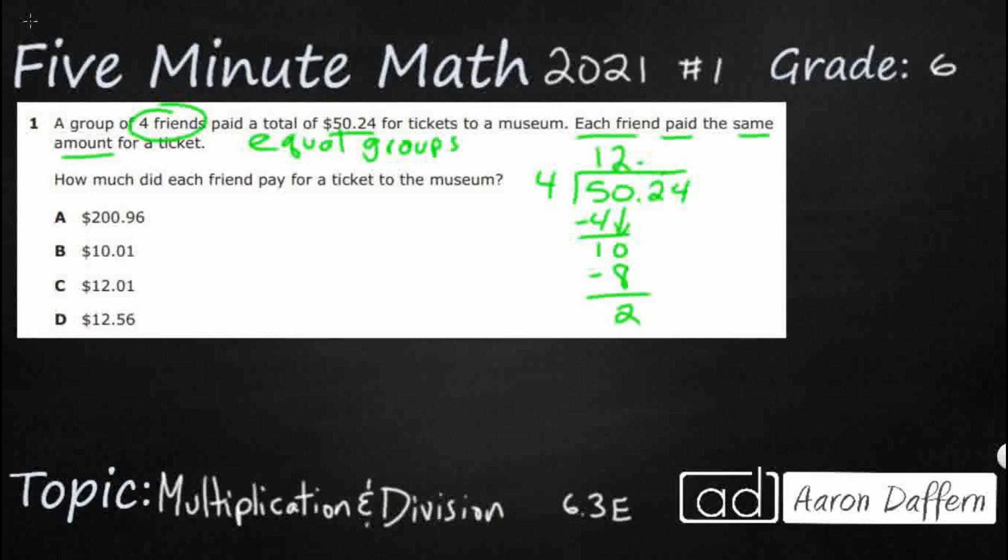Now we are going to pretend once again as if that decimal is not there. We're just going to bring this two down. It's not 2.2, it's just 22. We've already done everything we need to with the decimal by putting it up in our quotient.